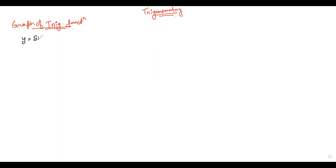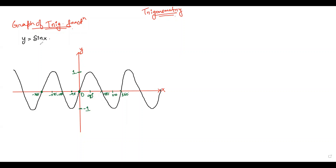Let us begin with y = sin x. The graph of y = sin x is a sinusoidal curve which ranges between -1 and 1. We can verify some values from the table seen in the last video: at x = 0, sin 0 is 0; at x = 90, sin 90 is 1; at x = 180, sin 180 is 0; at x = -90, sin(-90) is -1 and so on. Since y = sin x oscillates between -1 and 1, the range of this function is [-1, 1].